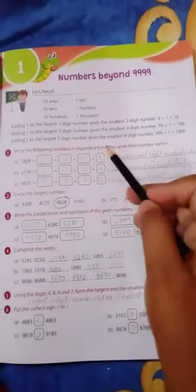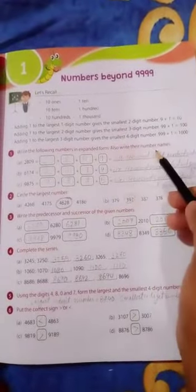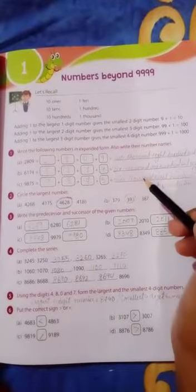Write the following numbers in expanded form. Also write their number names. Now write this in expanded form. Okay, question number 2.